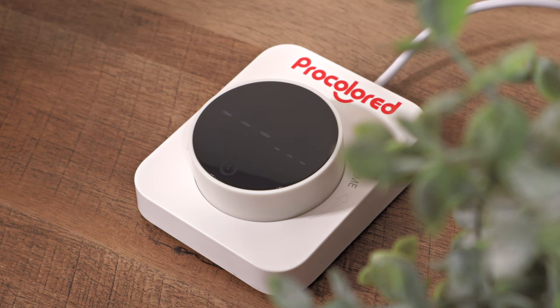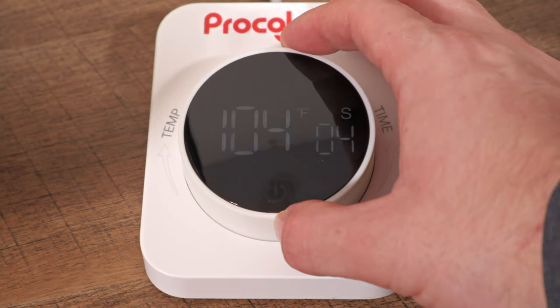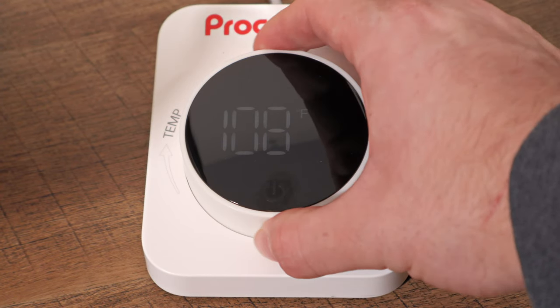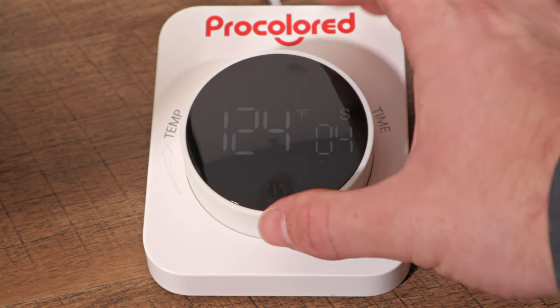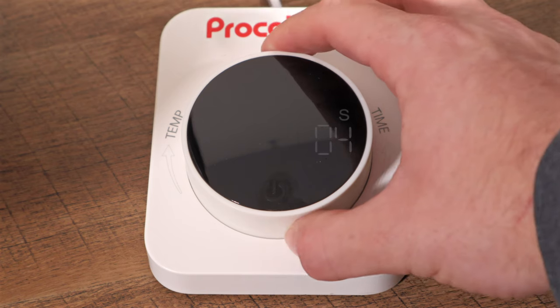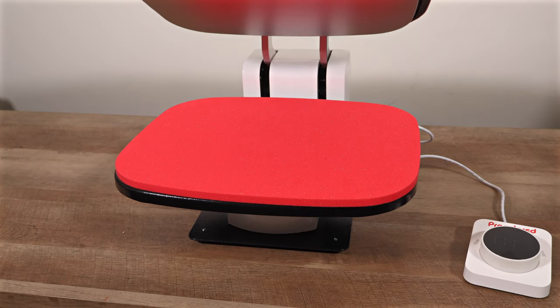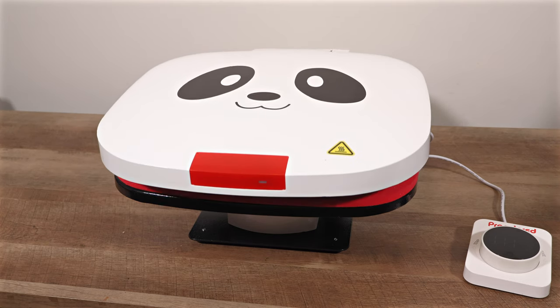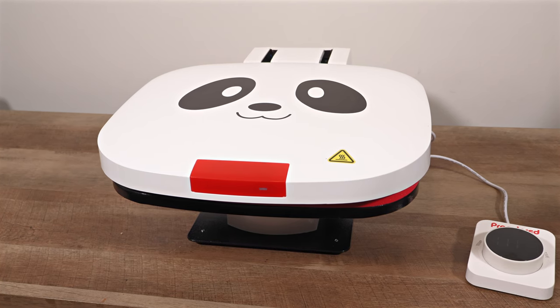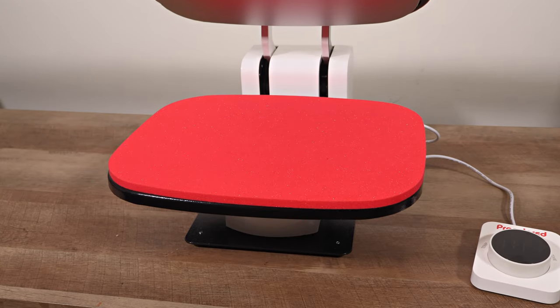The control system is another standout feature. It includes a high-quality dial that you can turn to the right to adjust the temperature or to the left to set the time. It's intuitive and smooth, making setup quick and frustration-free. To start the press, you have two options. Either tap the power button on the dial or press the conveniently located red button at the top of the machine. Overall, this heat press feels like a well-thought-out addition to the ProColored lineup, and we can't wait to show you how it works in our upcoming projects.